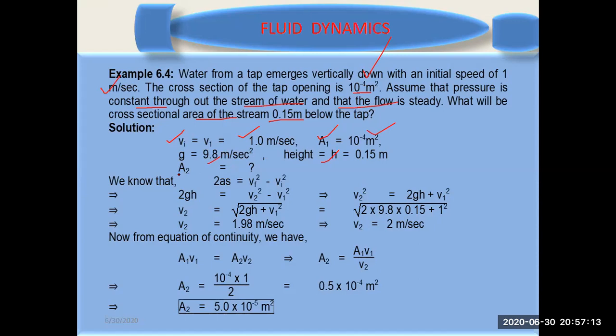What you are asked is to calculate the area of projection of the stream which is at a height of 0.15 meters below the tap.